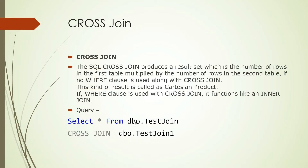Then we have cross join. A cross join produces a result set which is the number of rows in the first table multiplied by the number of rows in the second table, when there is no WHERE clause used. So if your first table has five records and your second table has five records, your result will have 5 × 5 = 25 records if there is no condition mentioned. If a WHERE clause is used, it will function like an inner join because records will be filtered on the match condition.